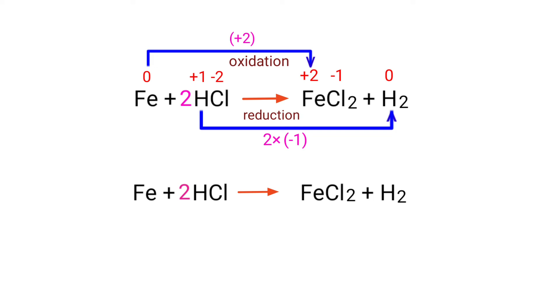Now you can balance the number of atoms in this equation. The equation is now balanced. There are 1 iron atom, 2 hydrogen atoms, and 2 chlorine atoms on both sides.